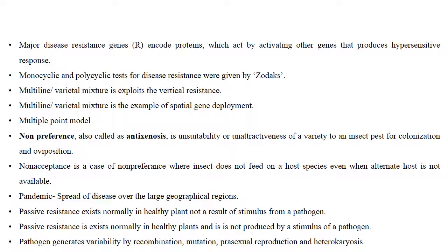Multiline or vertical varietal mixtures exploit vertical resistance and are an example of spatial gene deployment. Non-preference, also called antixenosis, is the unsuitability or unattractiveness of a variety to insect pests for colonization and oviposition. Non-acceptance is a case of non-preference where an insect does not feed on the host species even when an alternate host is not available.